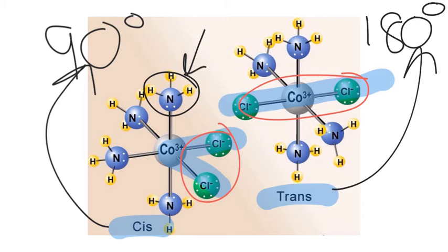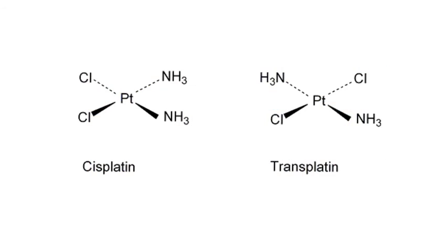So the biggest application of this isn't in an octahedral shape. It's in a square planar shape using platinum, and that's because of the cisplatin chemotherapy drug. You can see those examples here then. So this is cisplatin and transplatin.